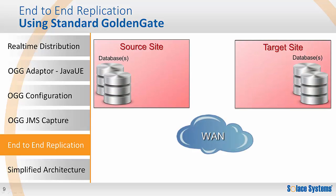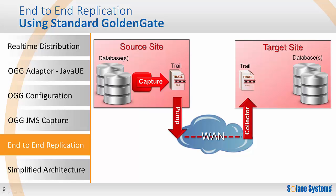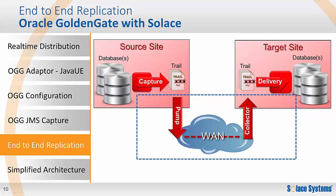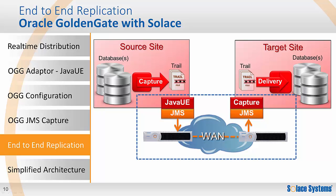Let's put the Java User Exit and JMS Capture together and look at how they can achieve end-to-end replication. The goal of the example is to replicate the source site database to the target site across the WAN. Using standard GoldenGate, you would configure a capture to send operations to the trail file, then a pump would read from the trail file and send operations across the WAN to a collector process, which would write the target trail file. Finally, a replica would read the contents of the trail file and inject the operations into the target database. To migrate to SOLUS and enable real-time distribution of events, you'll only need to change the pump and collector. The Java User Exit sends operations into the SOLUS message router, which routes the messages across the WAN and delivers them to the waiting JMS Capture, which then creates the target trail file for replication to the target database.